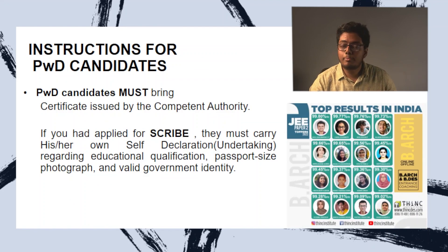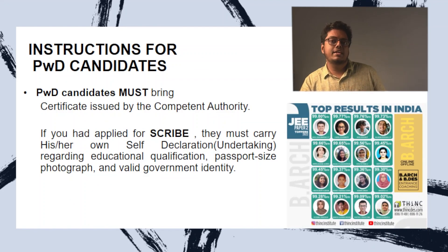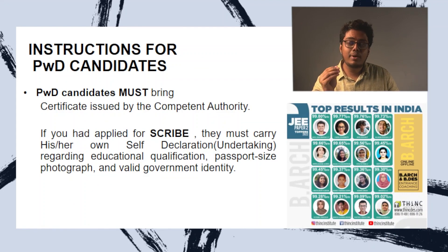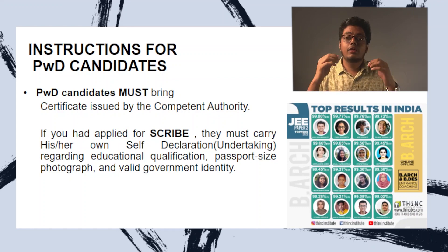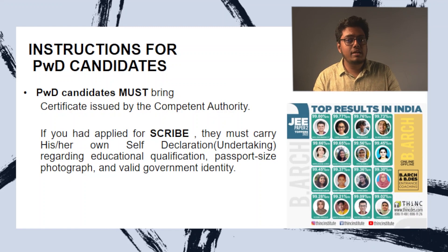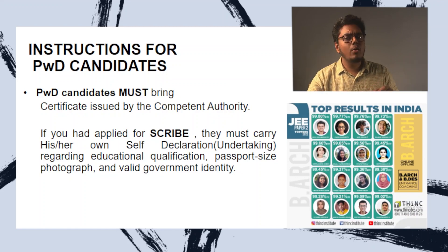Now let's look at the instructions for PWD candidates. PWD candidates must bring the certificate given to them by the competent authority. If you have applied for a scribe, the scribe must bring his or her own self-declaration regarding educational qualification, a passport size photograph, and valid government identity proof.